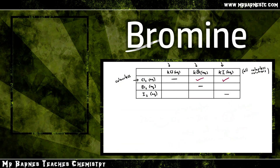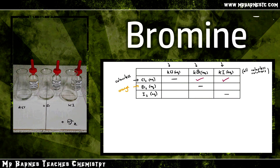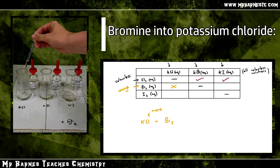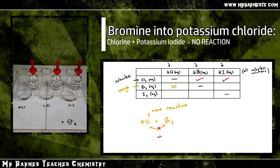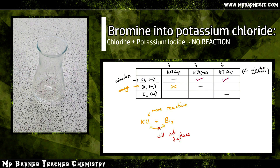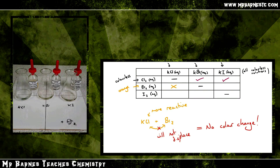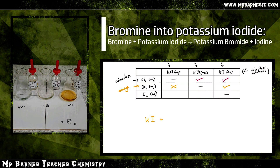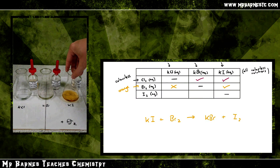Moving on to bromine water, adding it to potassium chloride and potassium iodide. There's no colour change when potassium chloride is added to bromine, because chlorine is more reactive and bromine will not displace it — so no colour change. Potassium iodide, on the other hand, does show a colour change, turning the same brown colour as before. That's because bromine is more reactive than iodine, so it displaces it: KBr and I₂ are produced, and the colour change is colourless to brown.